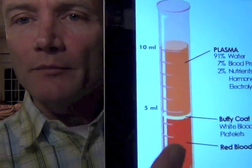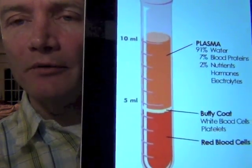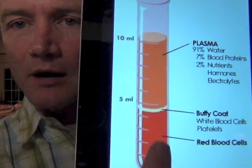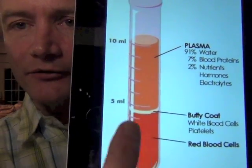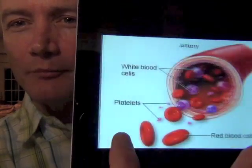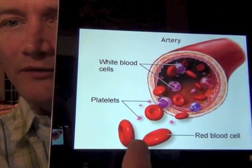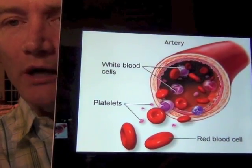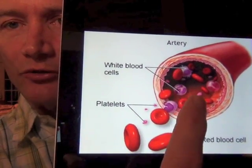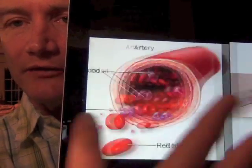When blood tests are done, the majority of the blood is made up of water, but the predominant cells are the red blood cells. White blood cells are much less common. If we look in your bloodstream, you have the red blood cells doing most of the work of carrying oxygen, but you also have the white blood cells and platelets.